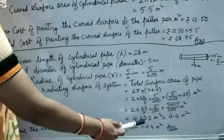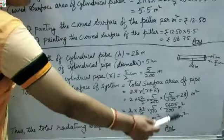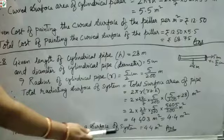Rounding off, we get approximately 4.4 m². Thus the total radiating surface of the system equals 4.4 m².